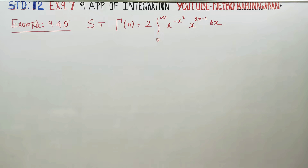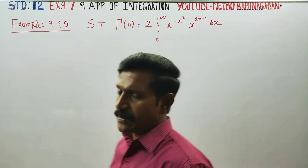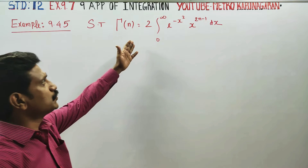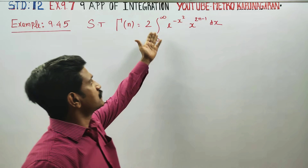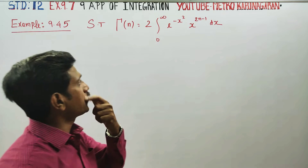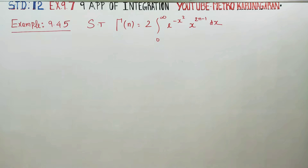Hello to Olsen students, I am Metro Karanagaran. In example 9.45, you have to show that gamma n is equal to 2 times the integral from 0 to infinity of e to the power minus x squared, times x to the power 2n minus 1, dx.